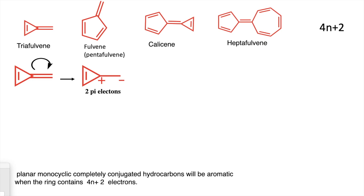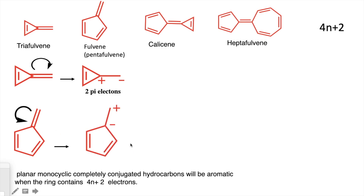If you look at fulvene, we see an essentially similar exocyclic bond. In this case, the bond shifts inward to form a cyclopentadienyl anion, which has six pi electrons. This is aromatic because Huckel's rule criteria are fulfilled.